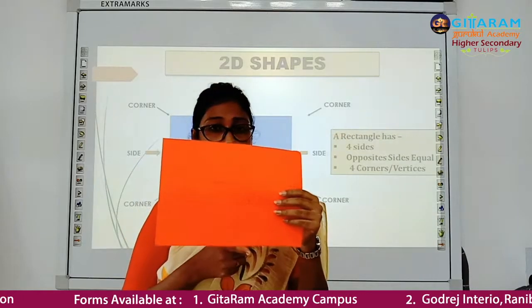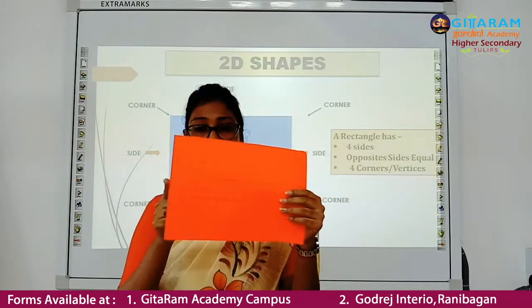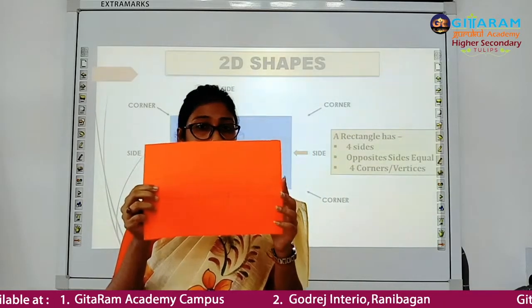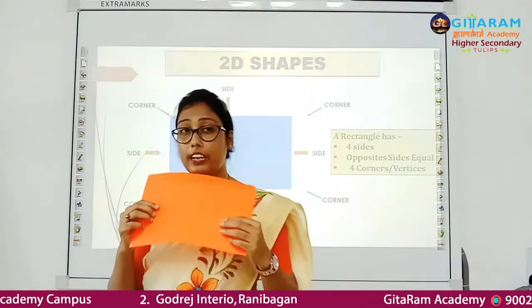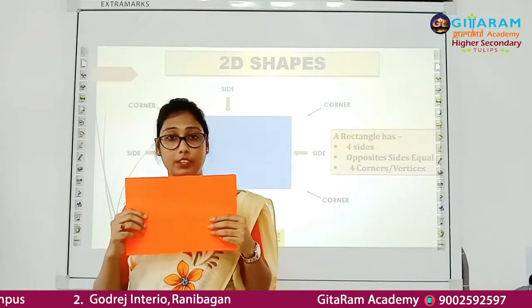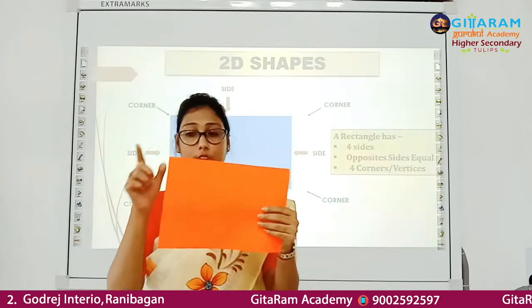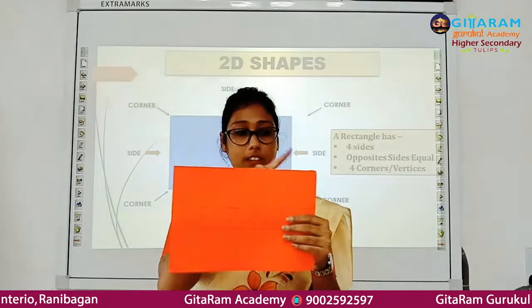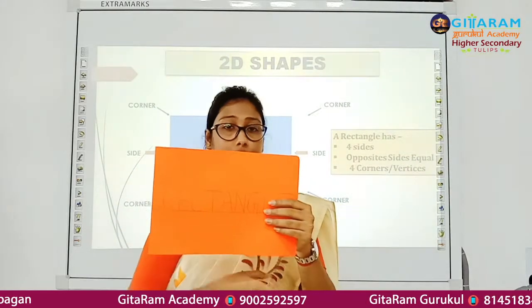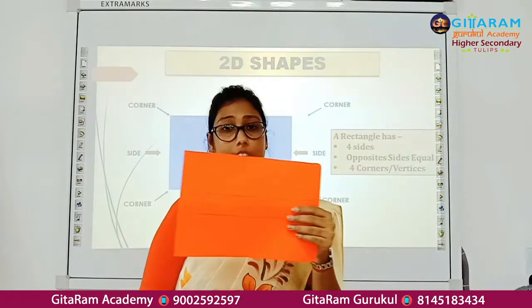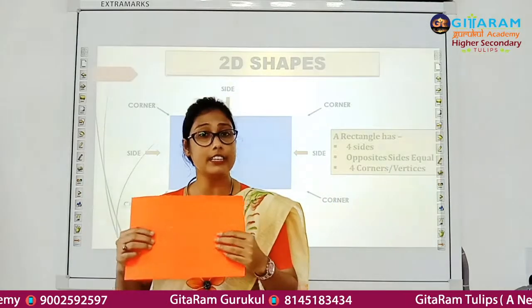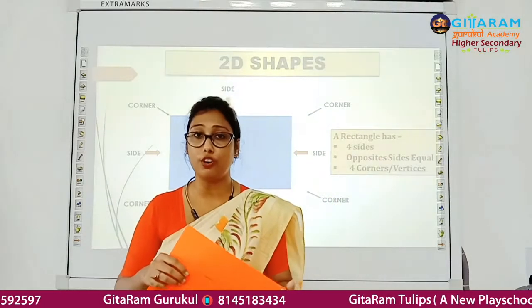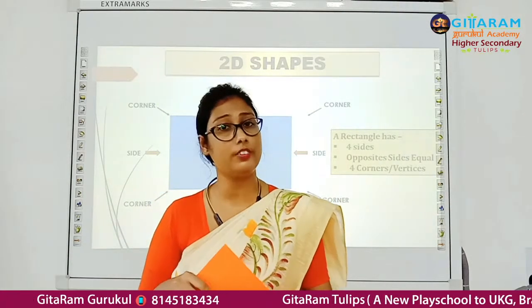These two opposite sides and those two opposite sides are equal. Rectangle has four corners or vertices: 1, 2, 3, 4. So a rectangle has four corners or vertices.